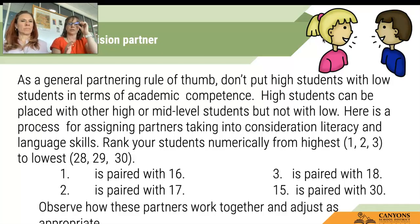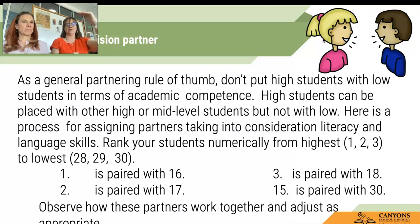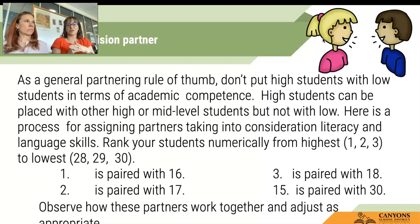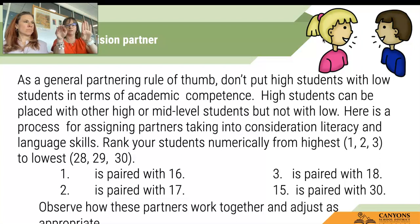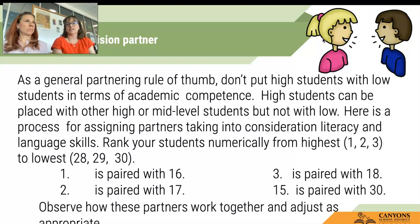So just a quick review of how you precision partner. You take your data and the first thing is you don't put high students with low students. Why? Because they're both going to get frustrated — either the high student is going to do all the work and not help that low student, or they'll try to help and the low student won't understand. So we don't put number one with number 30. What you do is take your data, cut it in half, put them right next to each other: one is paired with 16, two is paired with 17, three is paired with 18, 15 is paired with 30, and then you adjust how they work together.